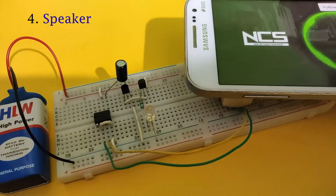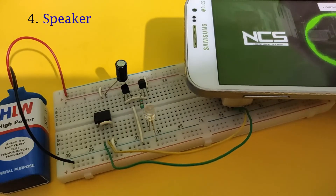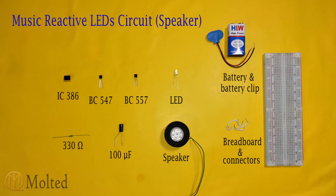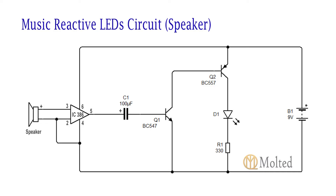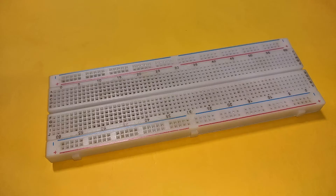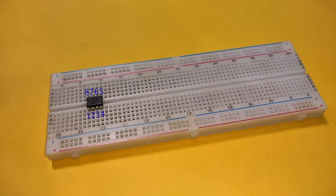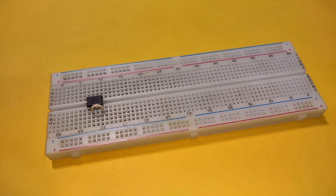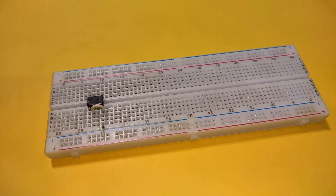The last circuit is by using a speaker. These are the components required and this is the circuit diagram. Place the LM386 IC on the breadboard with pin 2 connected to pin 4. Connect pin 4 to the negative rail and pin 6 to the positive rail.